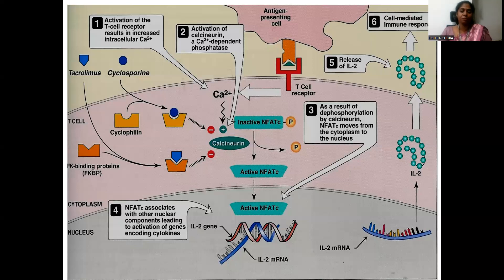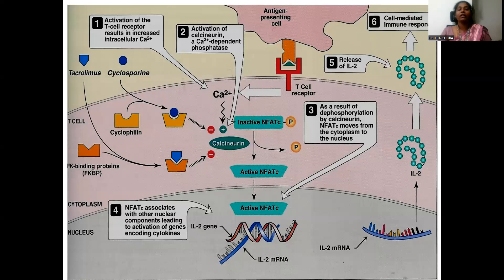When cyclosporine is used as an immunosuppressant, it binds to immunophilins inside the cell — specifically called cyclophilin — forming a complex that inhibits calcineurin. When calcineurin is not produced, NFATC remains inactive and is not dephosphorylated. Since NFATC is not activated, no mRNA coding for interleukin-2 is formed, so no interleukin protein is produced, resulting in no cell-mediated immune response. T-cell proliferation is decreased, the immune system is suppressed, and the recipient is allowed to accept the graft.